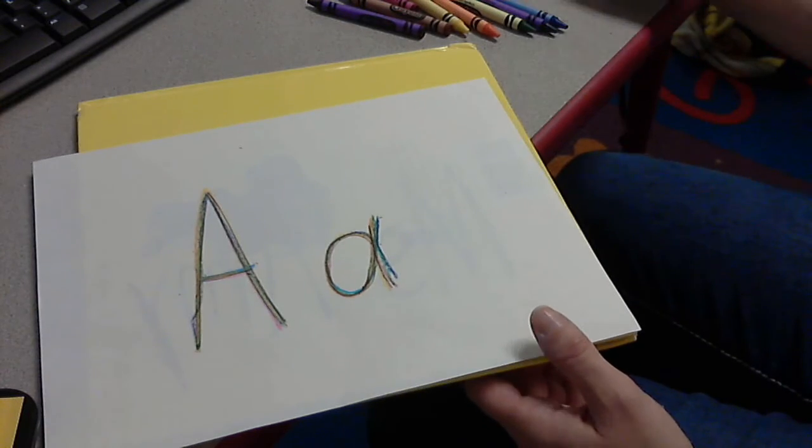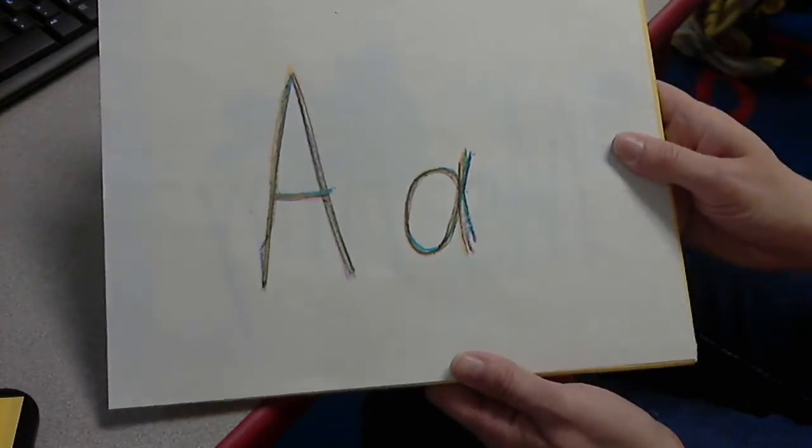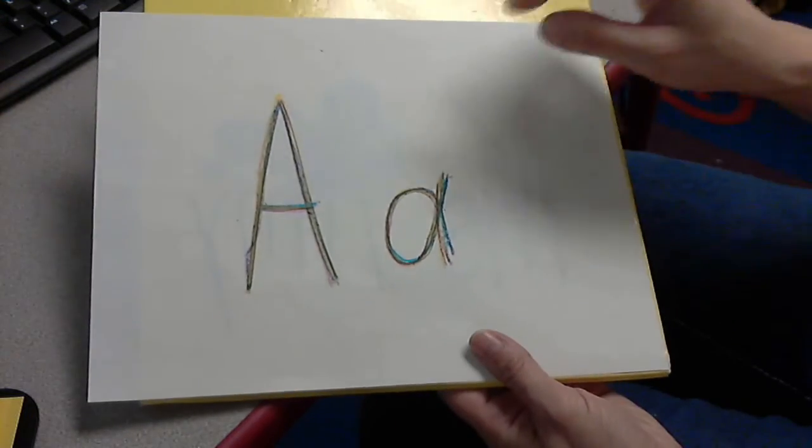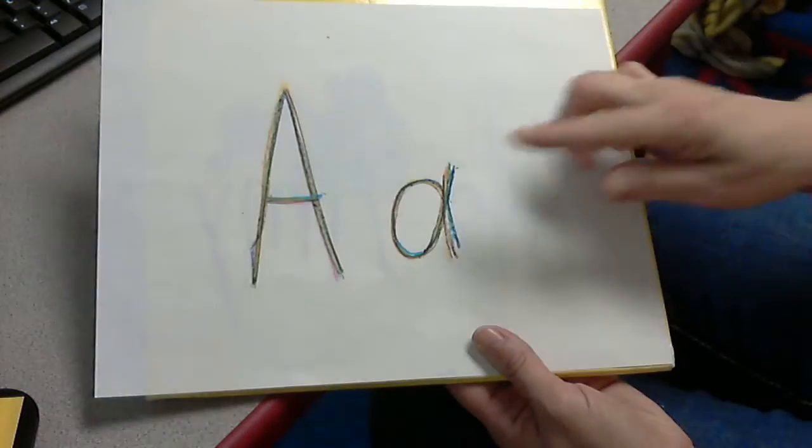So whenever we're working on a letter and I say let's work on our rainbow letters, it's the uppercase and the lowercase. And then you use six colors on each one.